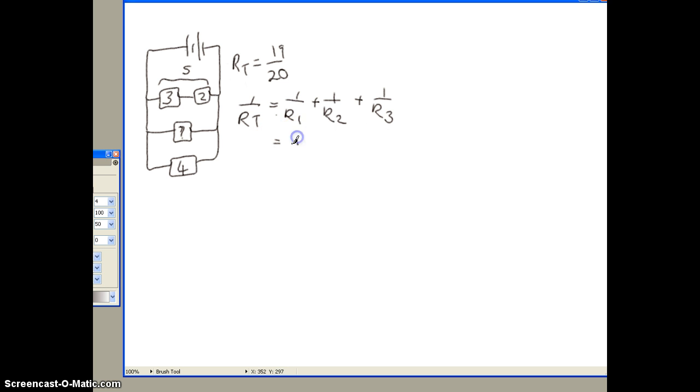This time I'll make R1 the combination of the two series. I'll make R2 4 and I'll leave this one as our question mark and that's equal to 19 over 20.